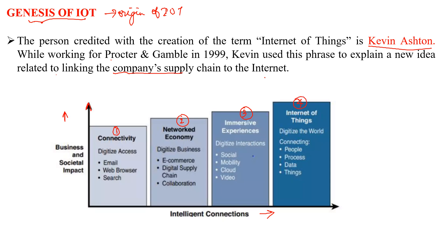Each phase of the genesis of IoT was built over the previous one. The first phase began in the mid-1990s and is called connectivity. In this phase, access was completely digitized — for example, email, web browser, and search.